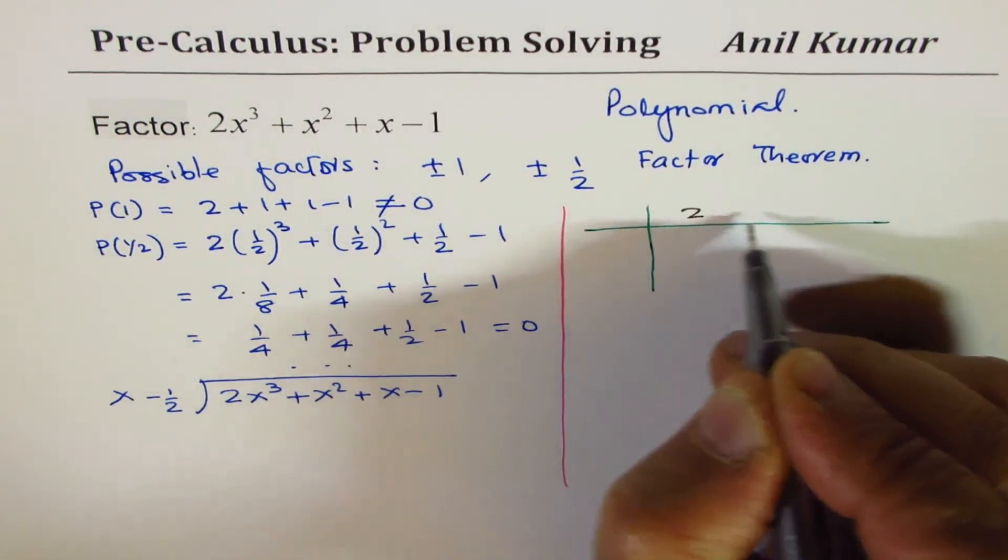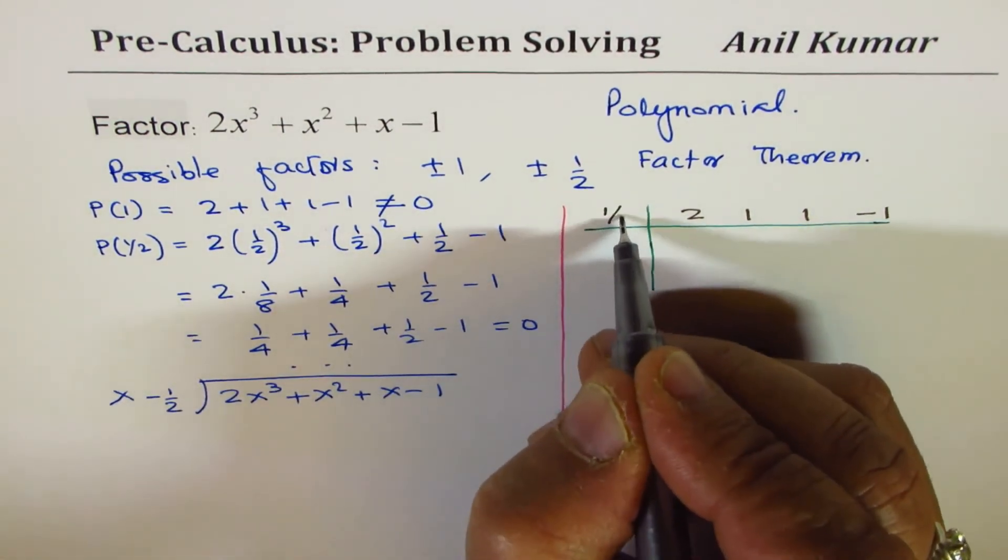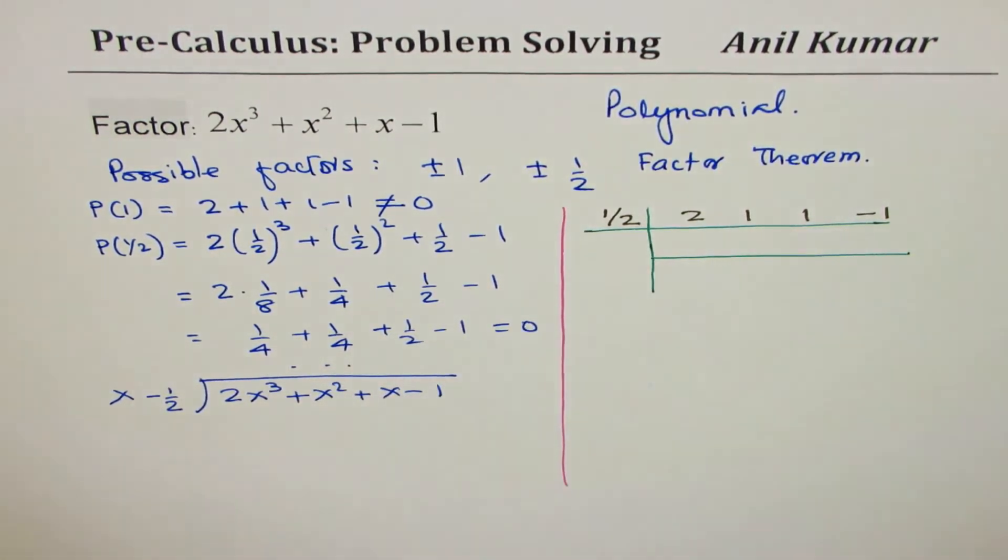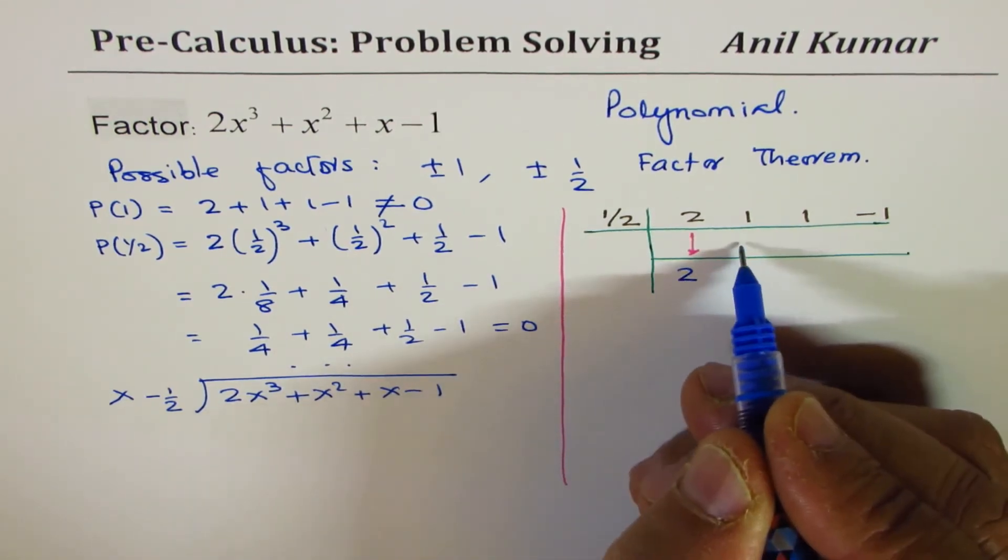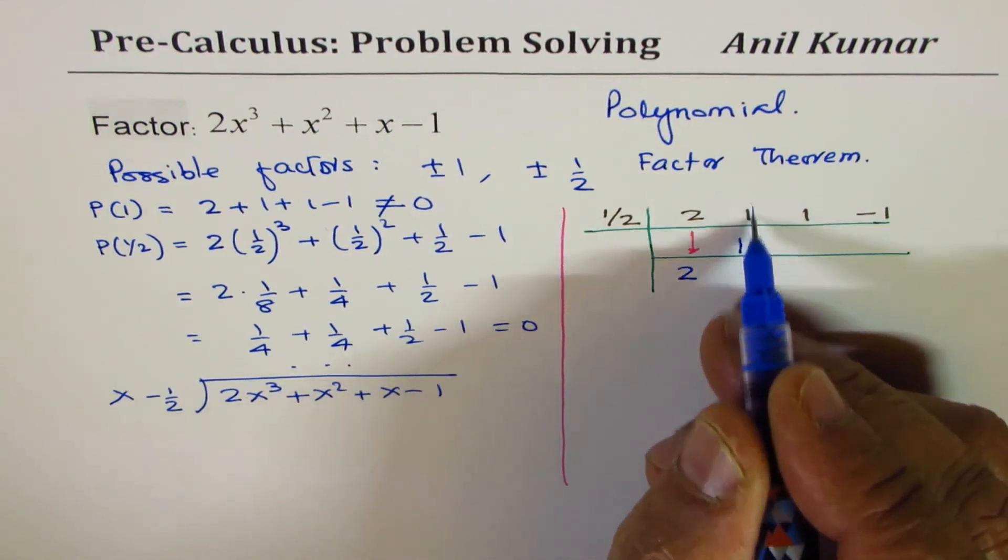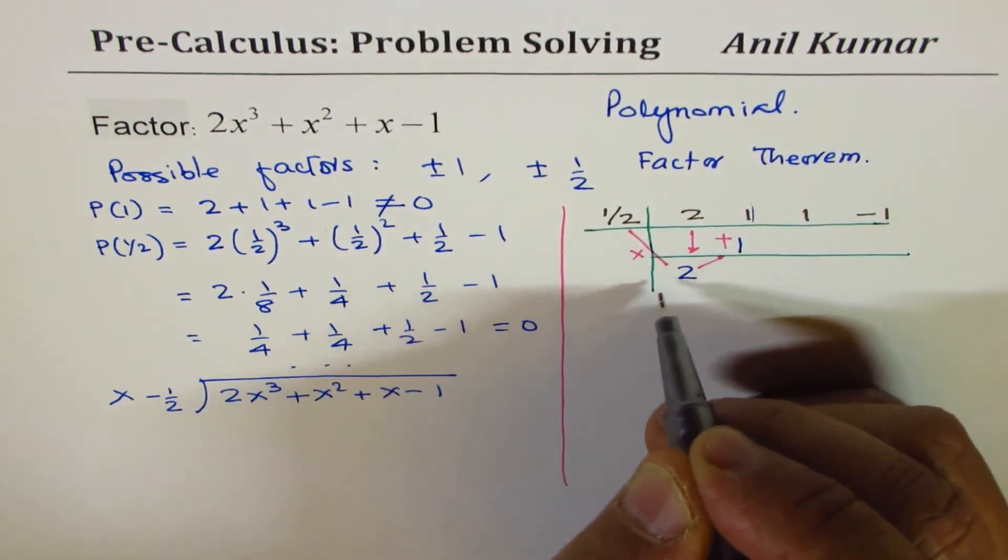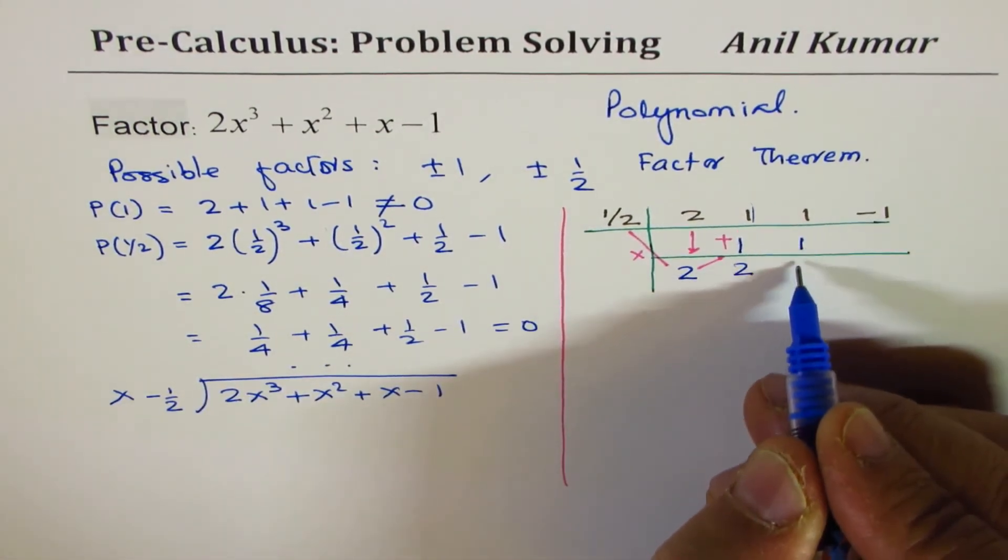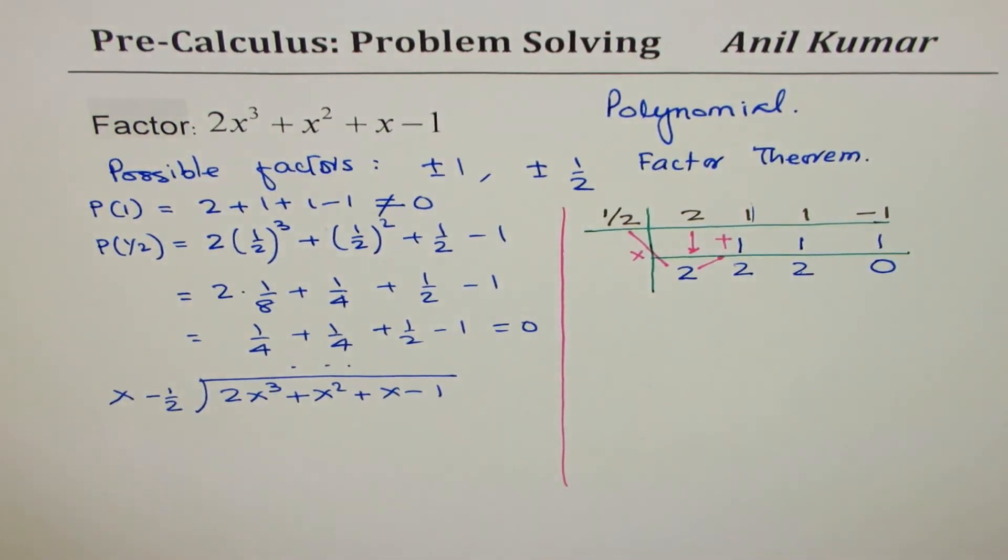We take these coefficients. The coefficients are 2, 1, 1, and -1. And the number which makes it 0 is 1/2. We'll take 1/2 here. And then we just bring the numbers down. So we'll just bring down number 2. Multiply 1/2 by 2, you get 1. Half times 2, write it there. Add them. So what you're doing here is you add these numbers, but here you multiply times and then write it. Well, 1 + 1 is 2. Half times 2 is again 1. 1 + 1 is 2. Half times 2 is again 1. However, now you get 0.